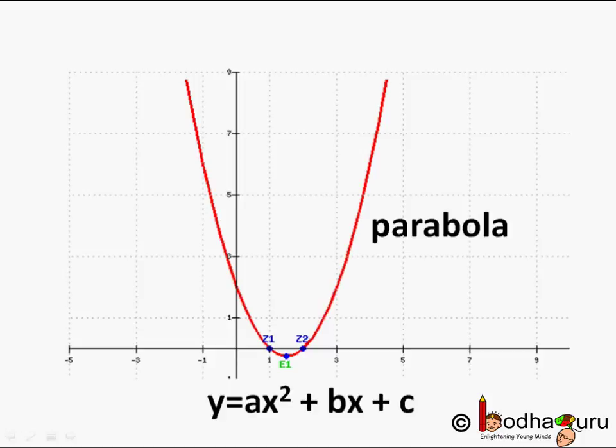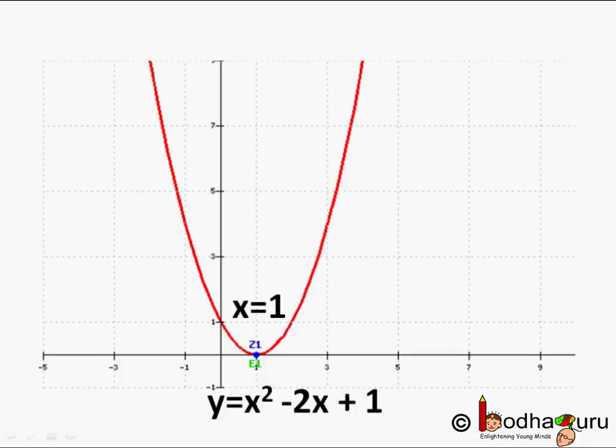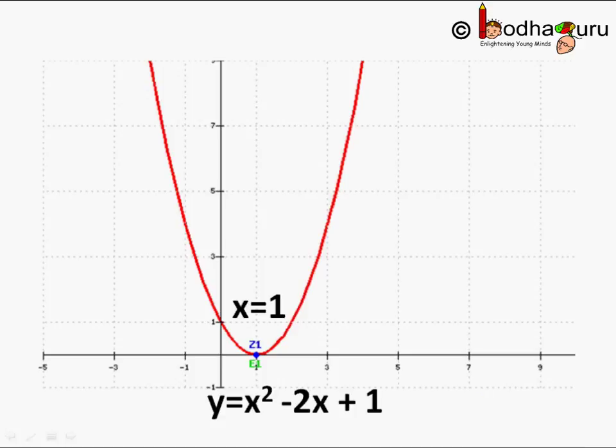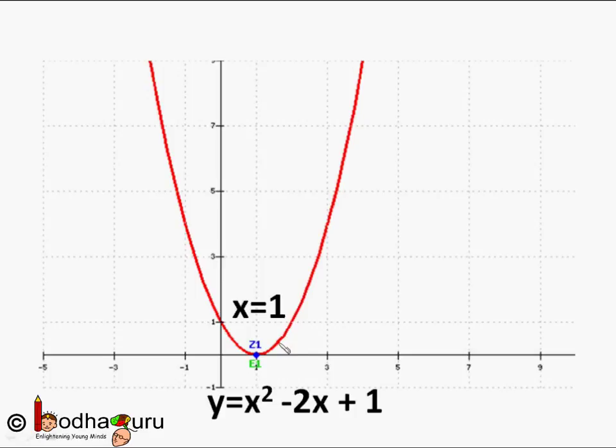Now, do all quadratic polynomials have two zeros? Let us take another example x² - 2x + 1. If we draw the graph of this polynomial using the same method we explained earlier, like taking different values of x and finding the value of y, it would look like a u shape and it will be touching the x-axis at point x = 1. And it touches the axis at only one point. It means this quadratic polynomial x² - 2x + 1 has only one zero.